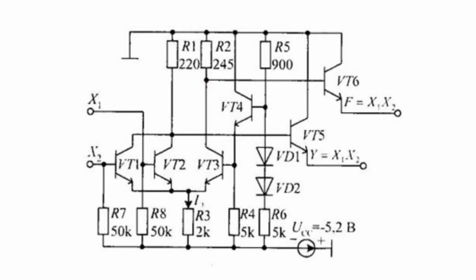If the levels of the logical 1 are applied to all inputs, transistors VT1 and VT2 are closed, and transistor VT3 is open. The current is switched to the latter.